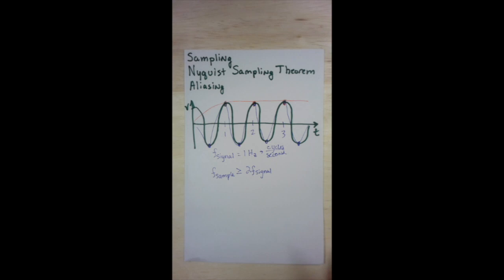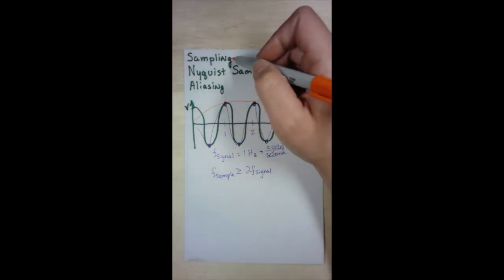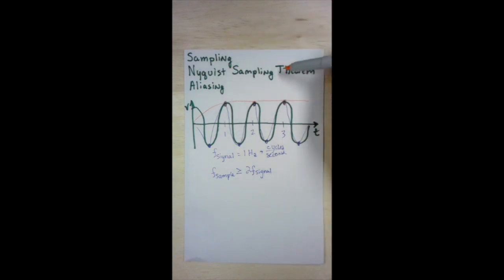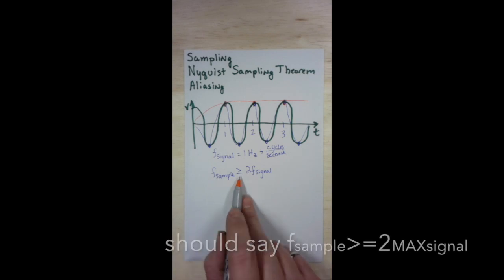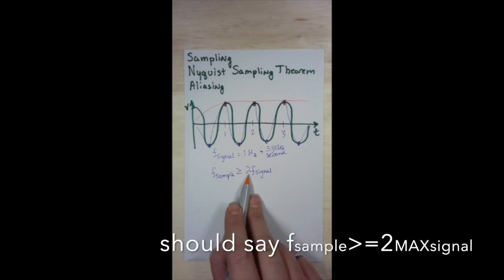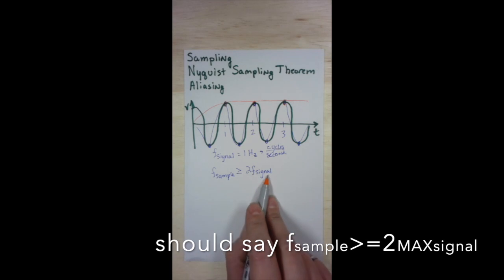All right. I hope this sums up sampling, which is turning a real world analog signal into a discrete signal to be stored or utilized on a computer. Nyquist sampling theorem, which states that the frequency of the sample must be greater than or equal to two times the frequency of the signal,